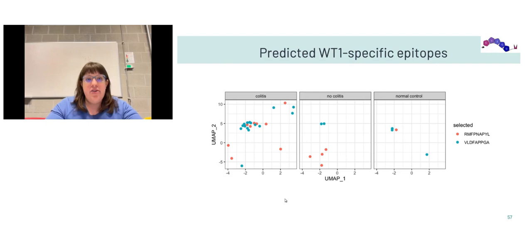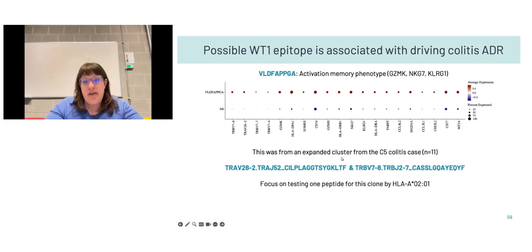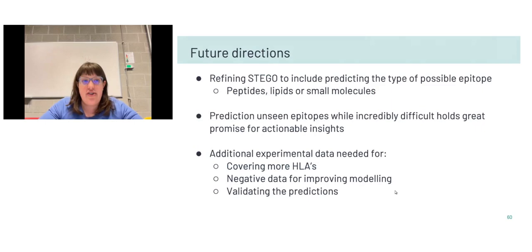Using epitope predictions and extending them with single-cell data: we identified several predicted WT1 epitopes from the TCRX outputs, mostly in the colitis samples. Using fine marker gene analysis within the Seurat process, the VLD epitope and its associated TCRs showed an activation memory-like signature, suggesting something was functionally occurring with this epitope. Looking further into the data, there was a predominant expanded cluster, adding weight to wanting to experimentally validate and narrowing the focus from all possible peptides to potentially one peptide from this paired clonotype, likely presented by HLA-A*02:01.